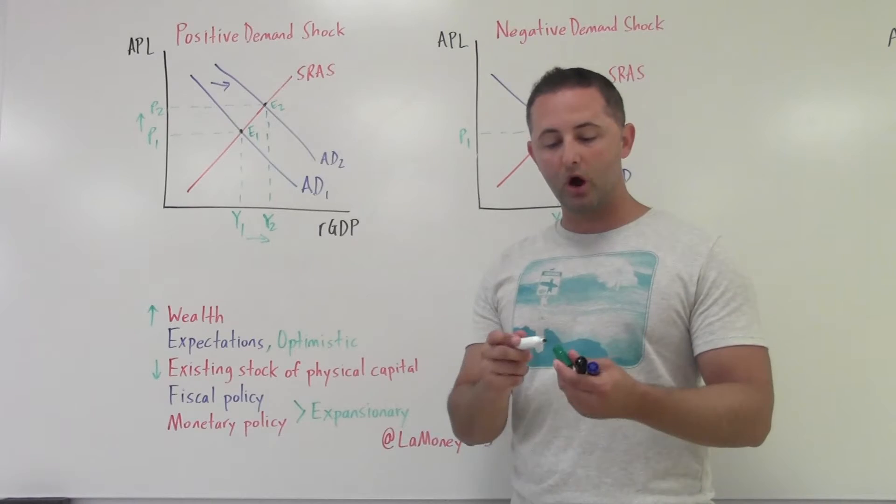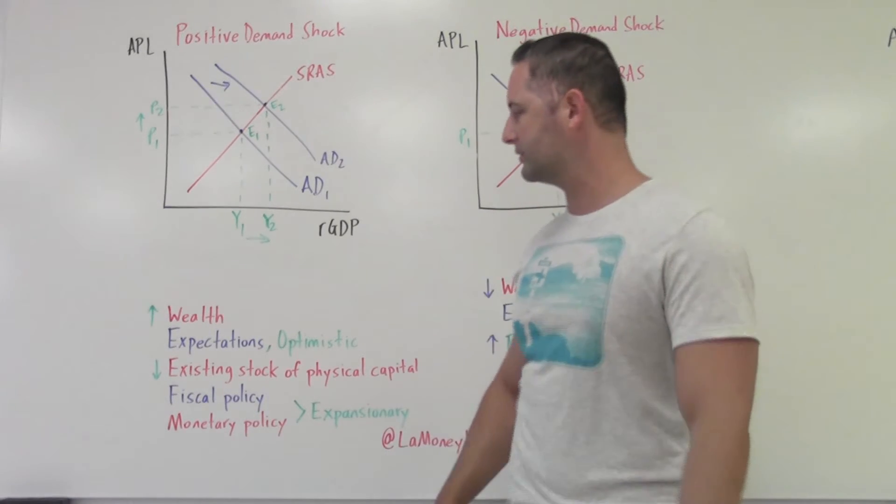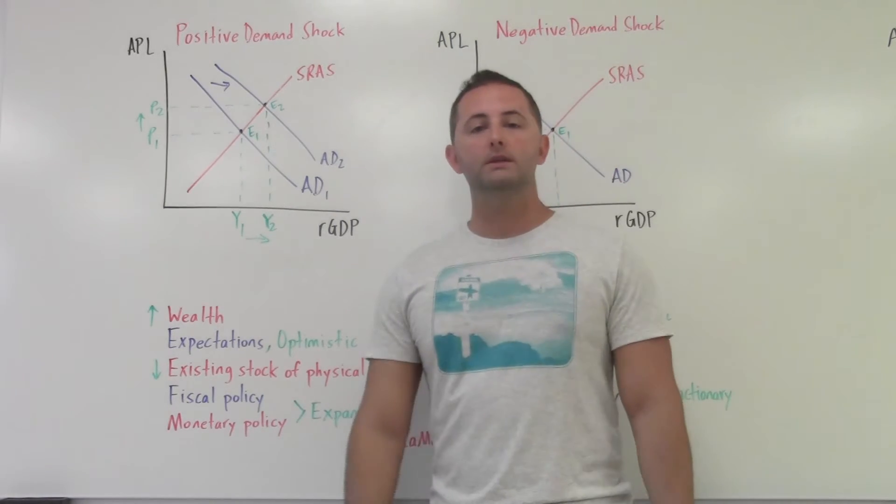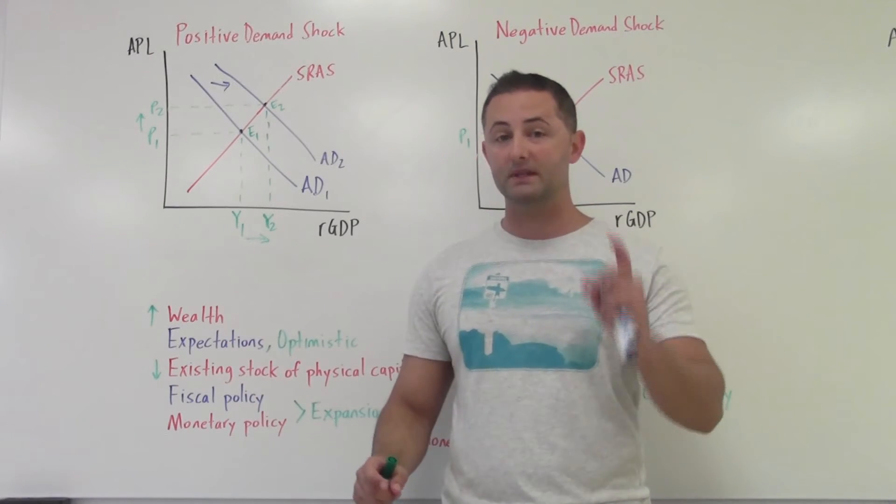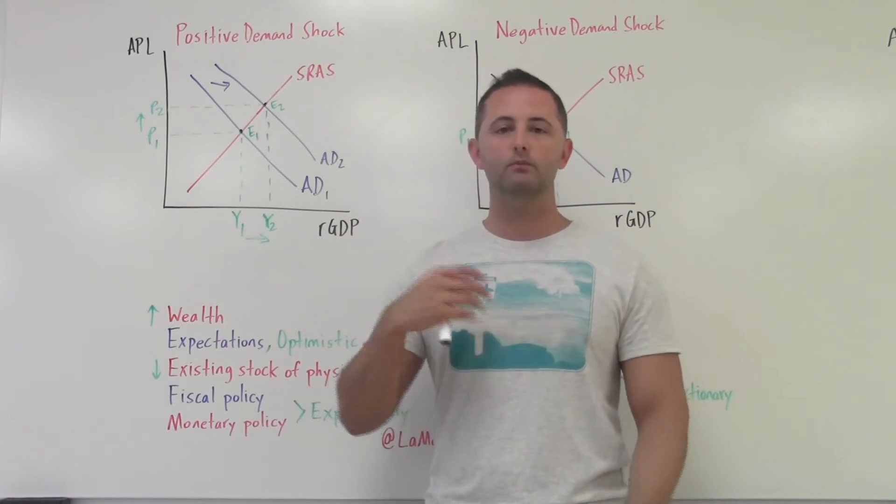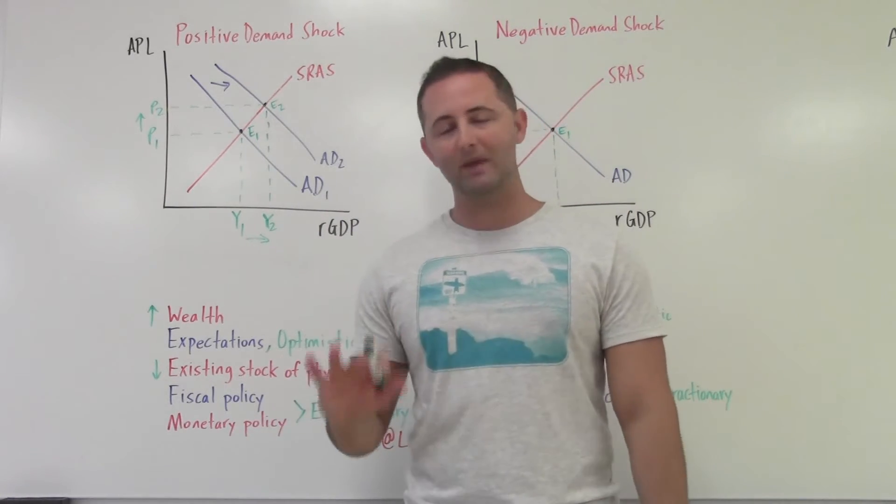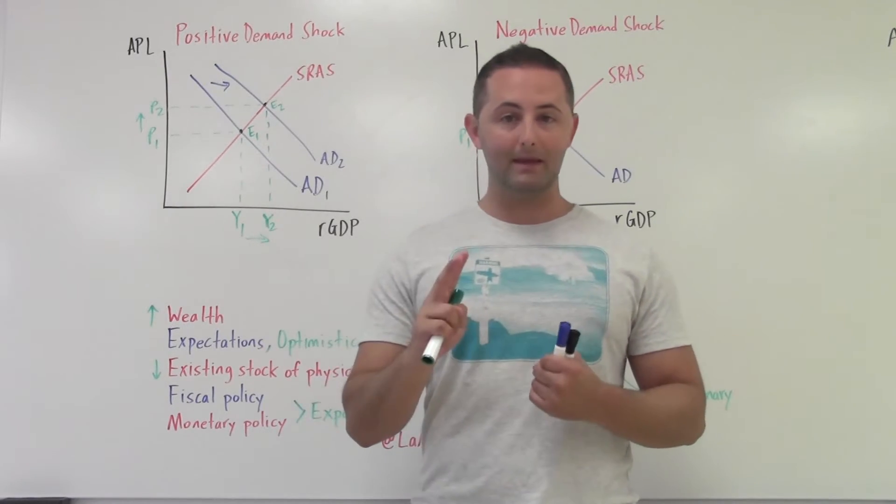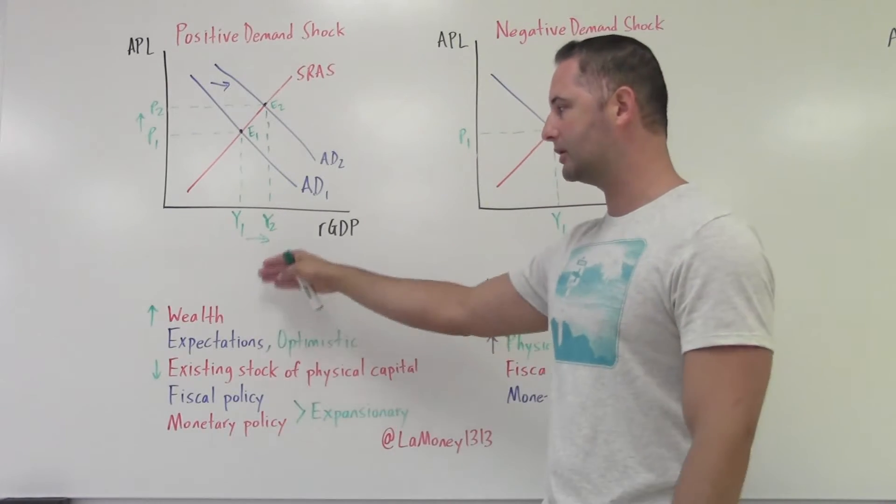So the next question is what would cause that? I'm not going to go over this in too great of detail because there was another video that already did. If we have an increase in wealth, so if the stock market goes up, remember this is wealth not for one person. This isn't one person getting rich. This is talking about the entire economy, aggregate. So what would make everybody feel wealthier or most people? It doesn't have to be every single person. There are two main things.